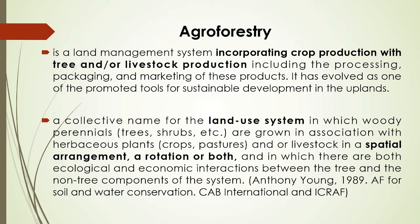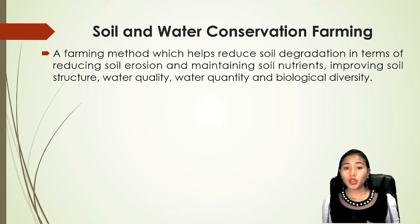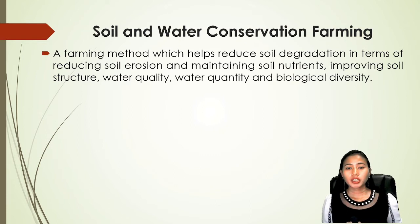Agroforestry is a combination of agriculture and forestry in one area. It is a very useful land management approach because nowadays human population has increased and demands for food and shelter have also increased. Soil and Water Conservation Farming is a farming method which helps reduce soil degradation by reducing soil erosion, maintaining soil nutrients, improving soil structure, water quality, water quantity, and biological diversity. Examples of conservation farming include crop rotation, stable mulching, and cover cropping, among others.